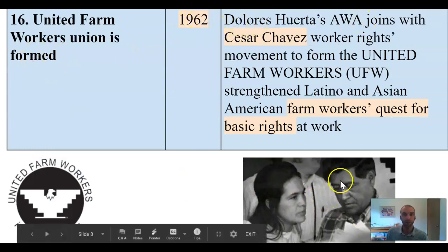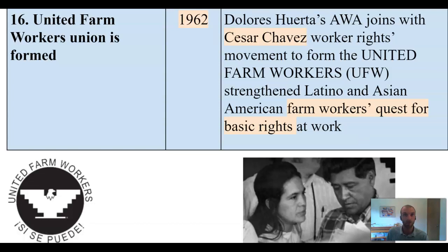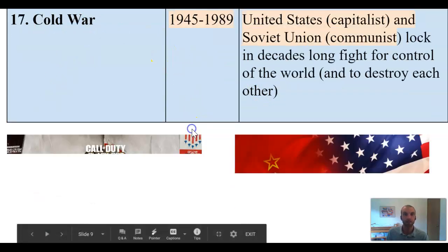In 1962, Dolores Huerta and Cesar Chavez joined two groups they were working with to form the United Farm Workers Union, or the UFW, which is still around. As crazy as it sounds, they just wanted farm workers — who literally pick the food that feeds us — to not get sprayed with chemicals and to have bathrooms where they work. Real basic human rights kind of things, but they needed to do extreme things. At one point, Cesar Chavez did not eat for over three weeks in order to draw attention to these issues.